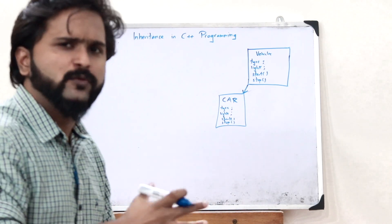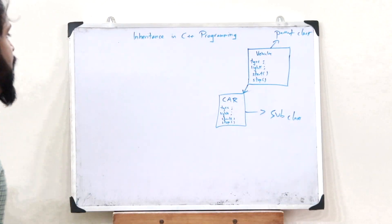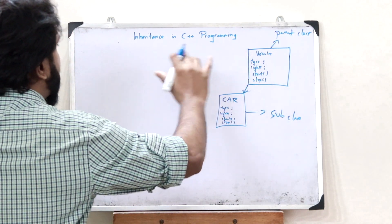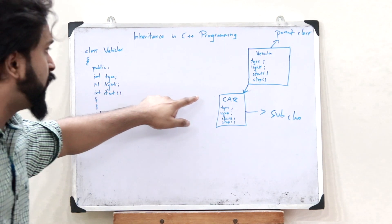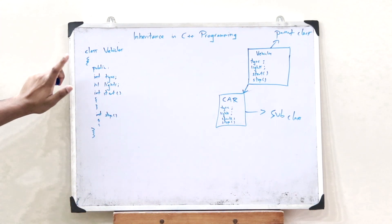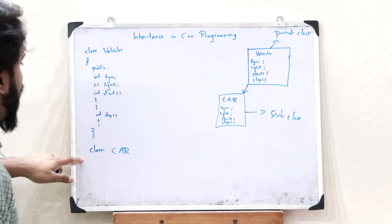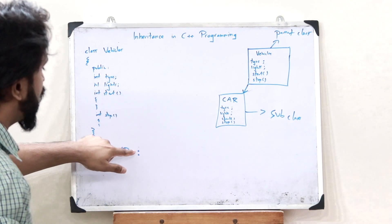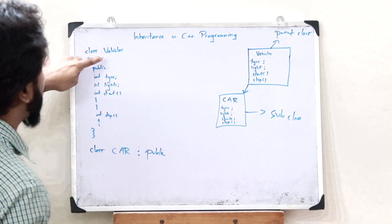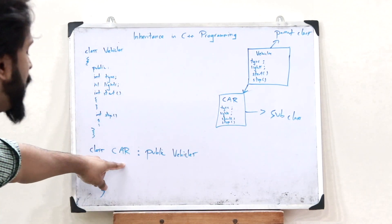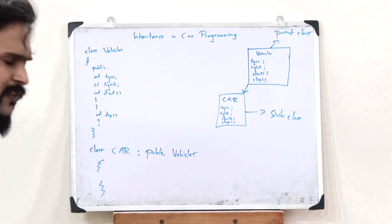Once we inherit the properties, the class car will also have the data members tire, lights, start, and stop. This is the basic concept of inheritance — classes of one type inheriting the properties from classes of another type. In C++, the parent class is vehicles and the subclass is car. We first declare the class car, then use a colon followed by an access specifier (say public) and the name of the base class vehicles. This creates a derived class inheriting from the base class.